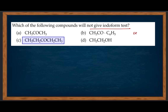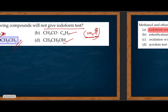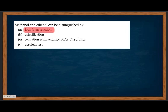For iodoform reaction, the compound must have a CH₃CO group. Compounds with this group can be converted in the iodoform reaction. Methanol and ethanol can be distinguished by the iodoform reaction.